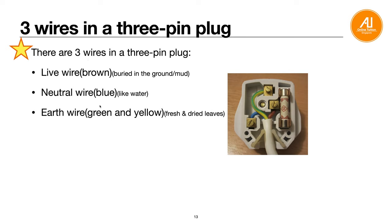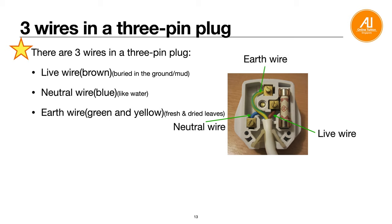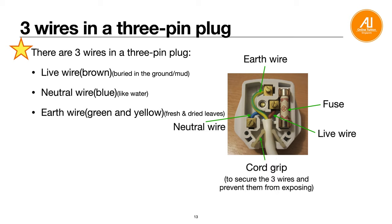Inside a three-pin plug, there are three wires: the live wire, which is brown in color (think of it as buried in the ground, covered with mud); the neutral wire, which is blue (like water, which is neutral); and the earth wire, which is yellow and green (like fresh and dry leaves). There is also a fuse and a cord grip - the plastic holder that secures the three wires and prevents them from being exposed. This has appeared in O-level exams.